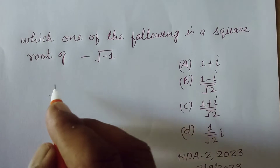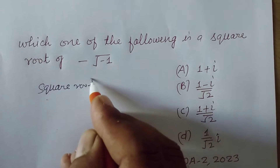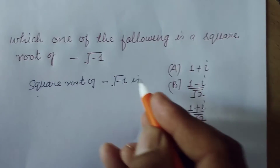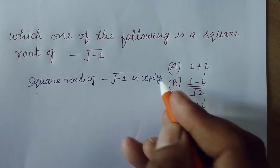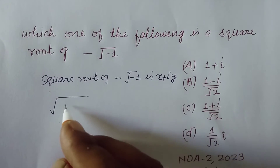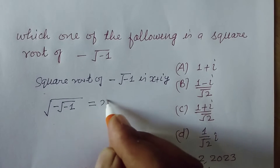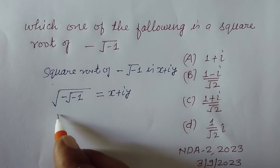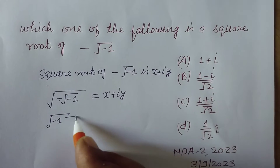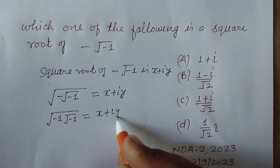So students, we assume the square root of −√(−1) equals x + iy. We write it as √(−√(−1)) = x + iy, where inside we have −1 · √(−1) = x + iy.